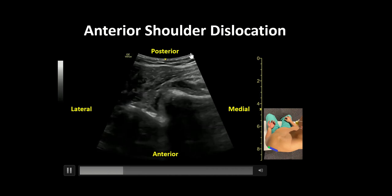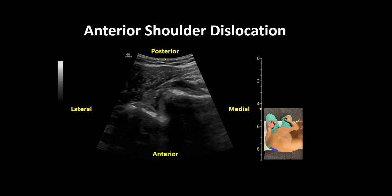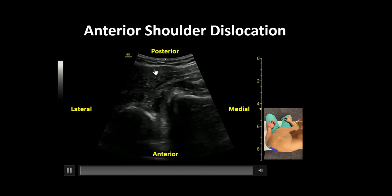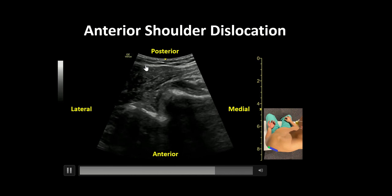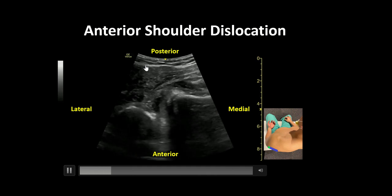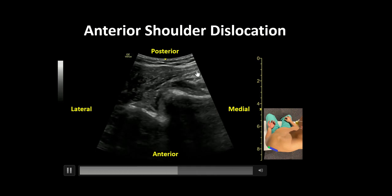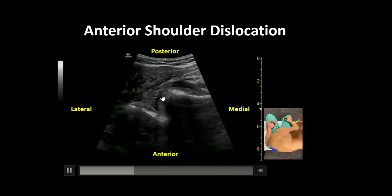To orient ourselves, the near field here is posterior and includes what is closest to the probe. We can see the muscle fibers of the deltoid and infraspinatus.